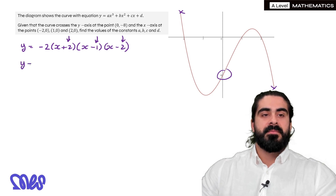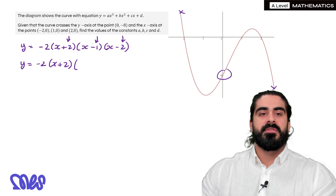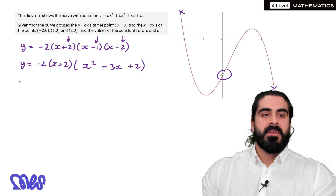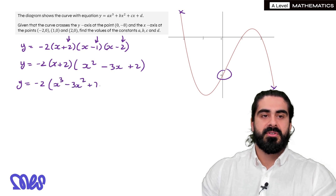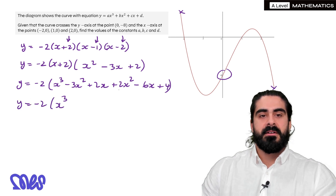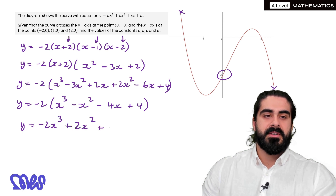Now all that's left to do is expand the brackets. My advice is to always expand the last two first — it makes the other expansion a bit easier. So x squared minus 2x minus x gives minus 3x, then plus 2. Then multiplying by x minus 2: x times everything gives x cubed minus 3x squared plus 2x. Then 2 times everything: 2x squared minus 6x plus 4. Simplify: x cubed, minus 3 plus 2 gives minus x squared, 2 minus 6 gives minus 4x, then plus 4. Finally multiplying the minus 2: minus 2x cubed plus 2x squared plus 8x minus 8. And that's our solution.